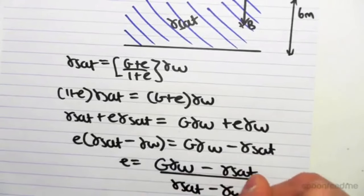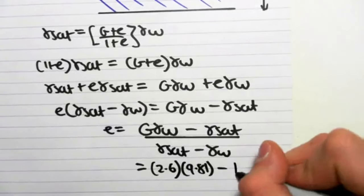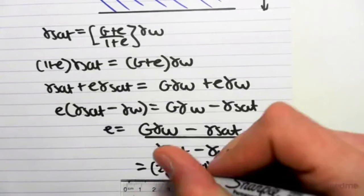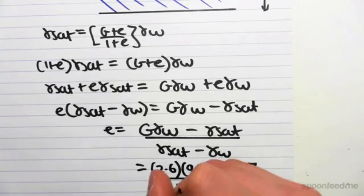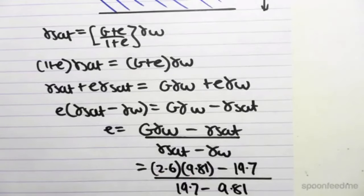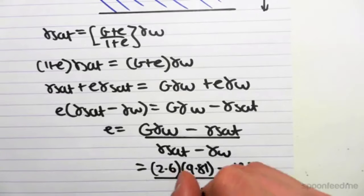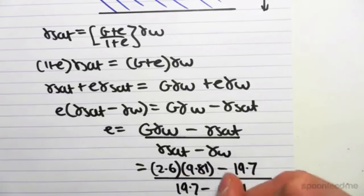So if we plug this all in, 2.6 gamma W is known as 9.81 minus gamma sat is 19.7 over 19.7 minus 9.81. So if we work this out, 2.6 by 9.81 minus 19.7 divided by 19.7 minus 9.81.